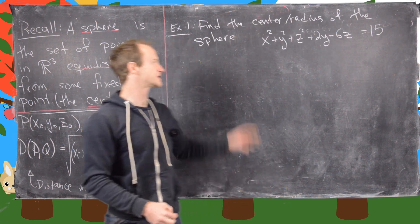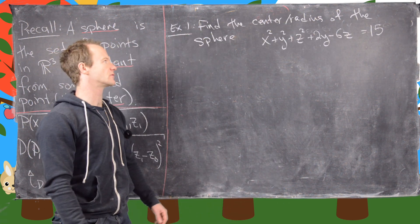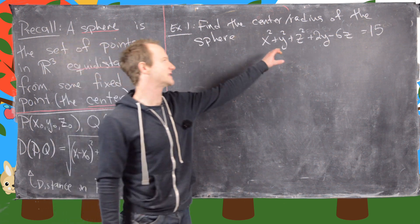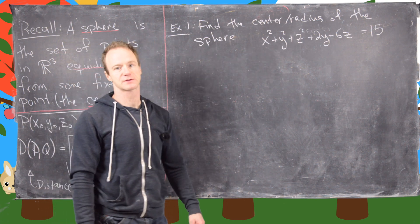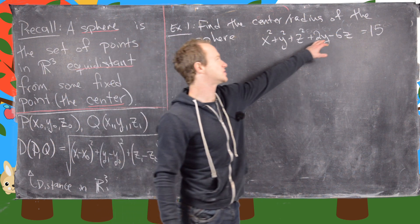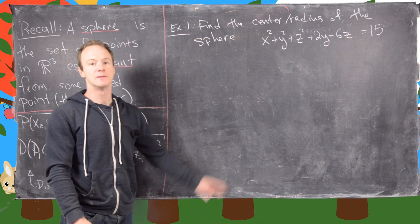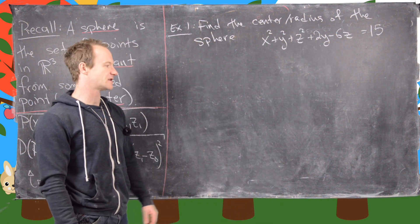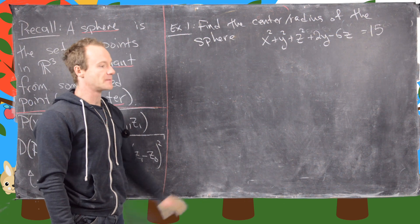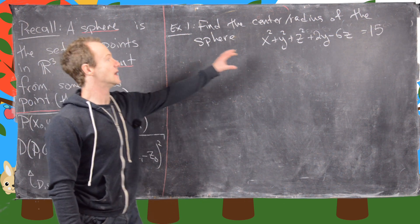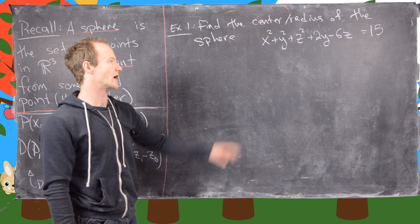For the first example, we want to find the center and radius of the sphere given by the equation x² + y² + z² + 2y − 6z = 15. That isn't of the standard form we derived, but it can be put into that form by completing the square.